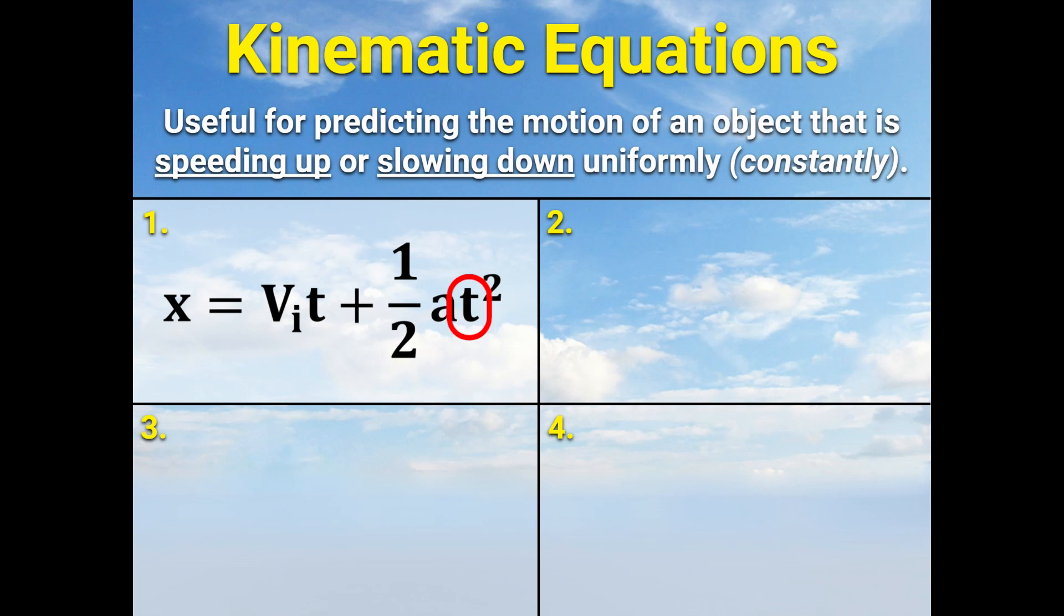That might be a little strange because we already saw time earlier in that equation, and usually you only see a variable pop up once per equation. But in this case, it pops up twice, and it happens to be squared at the end. Pretty weird.